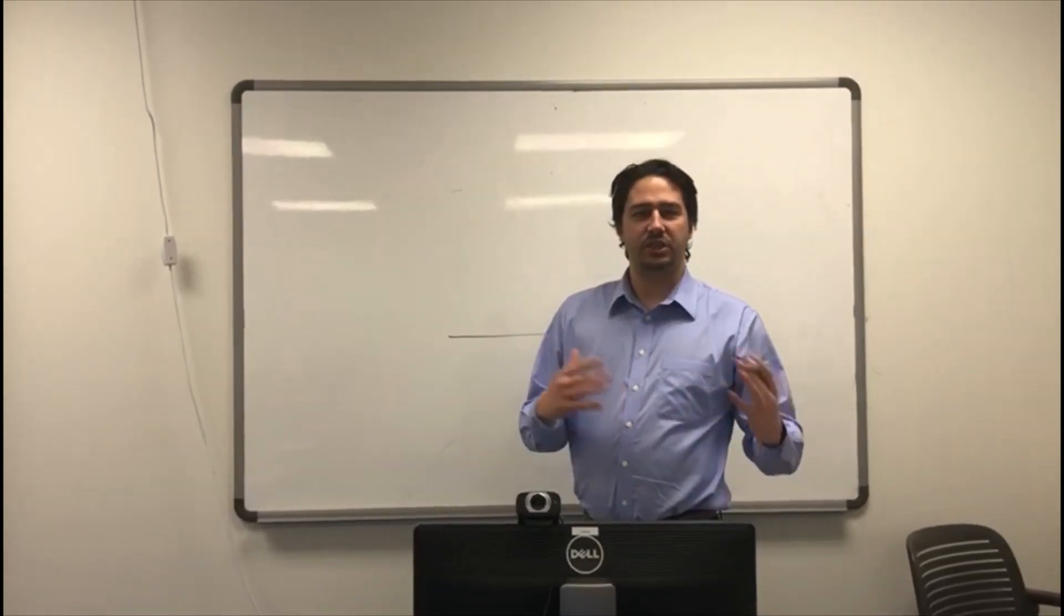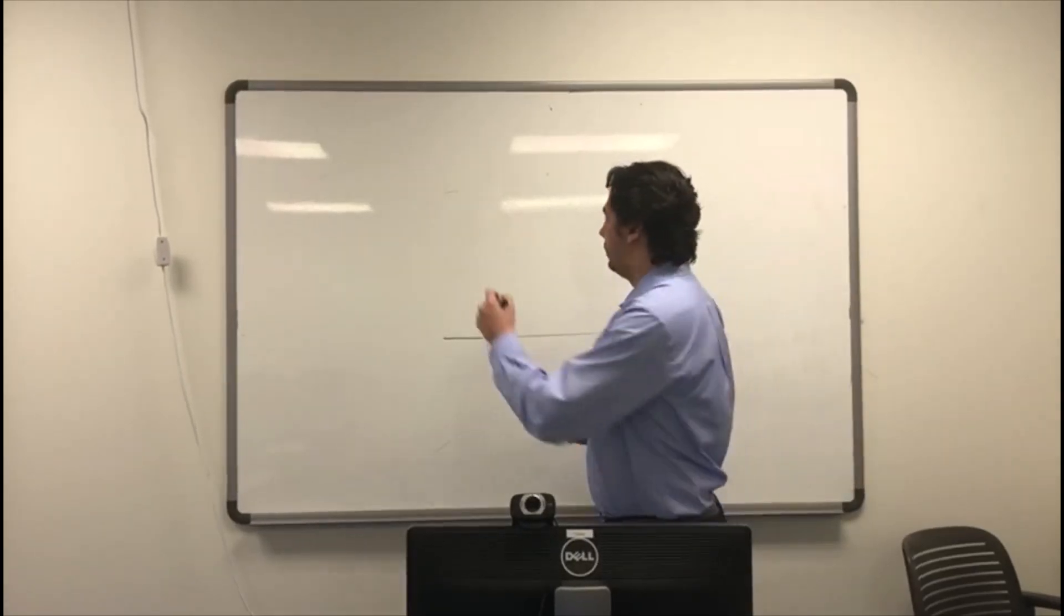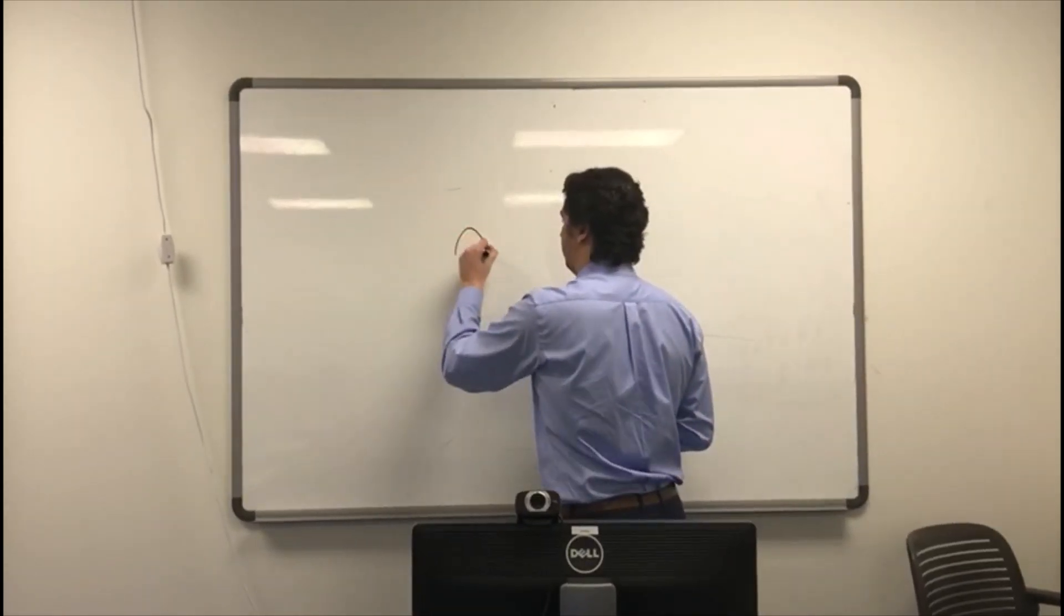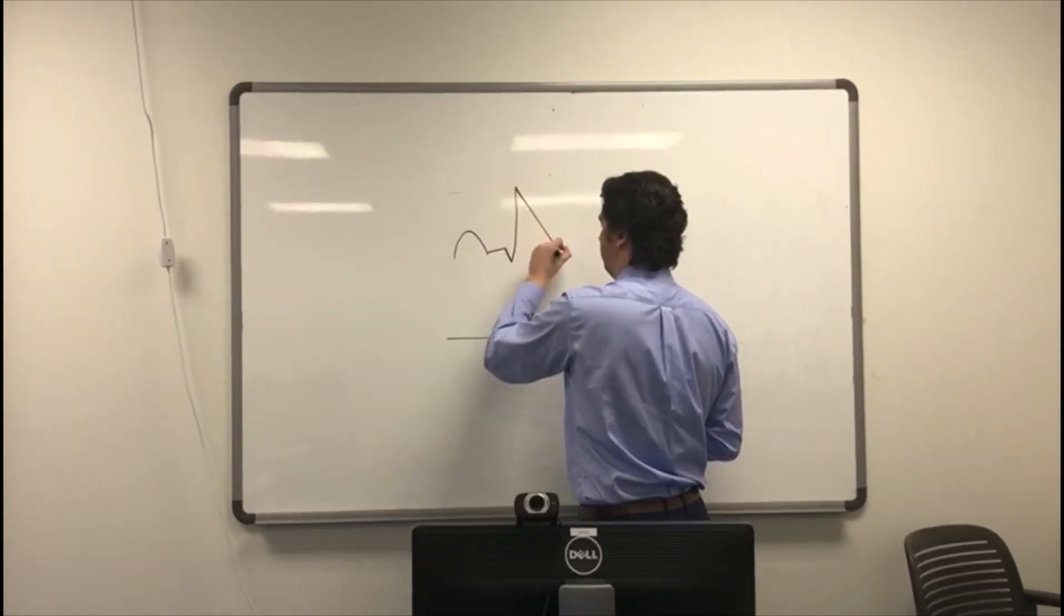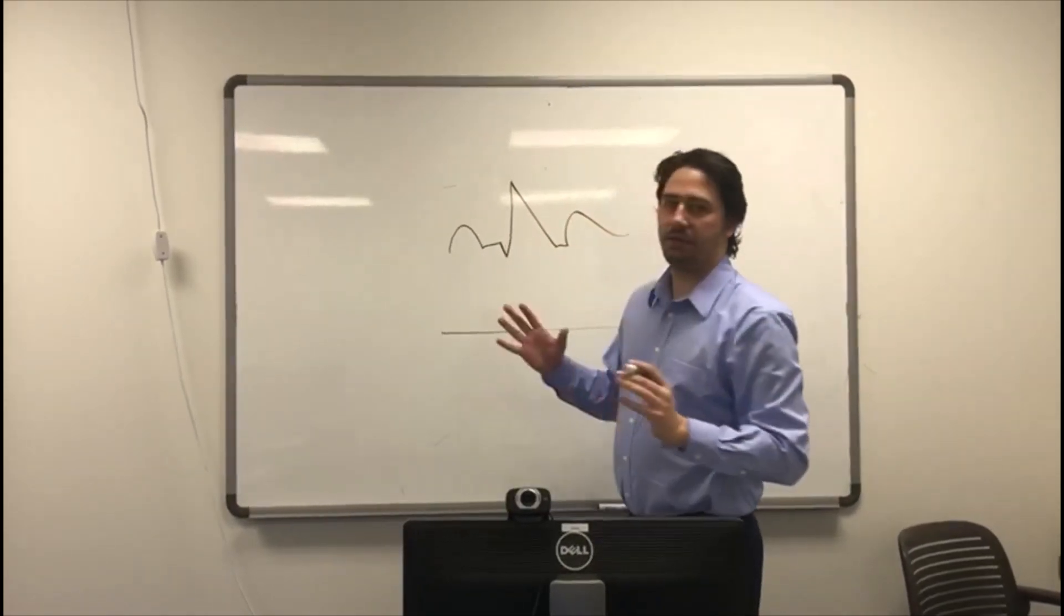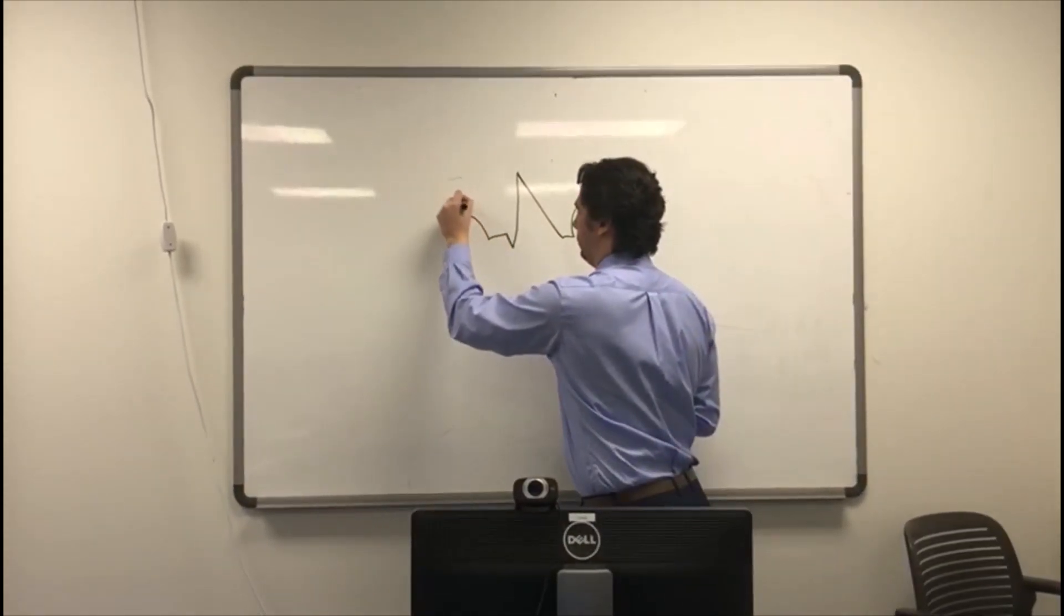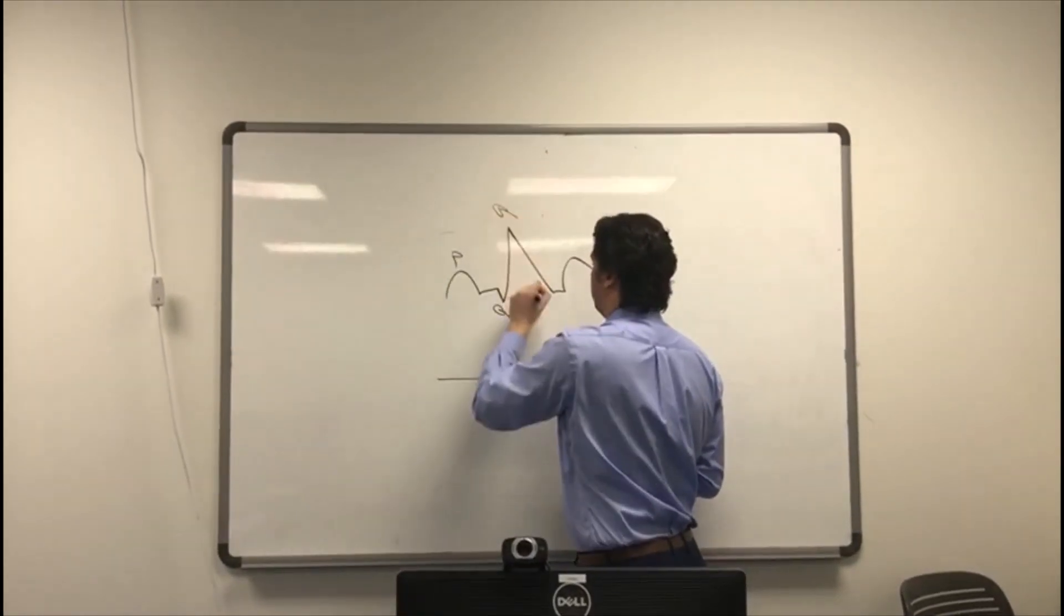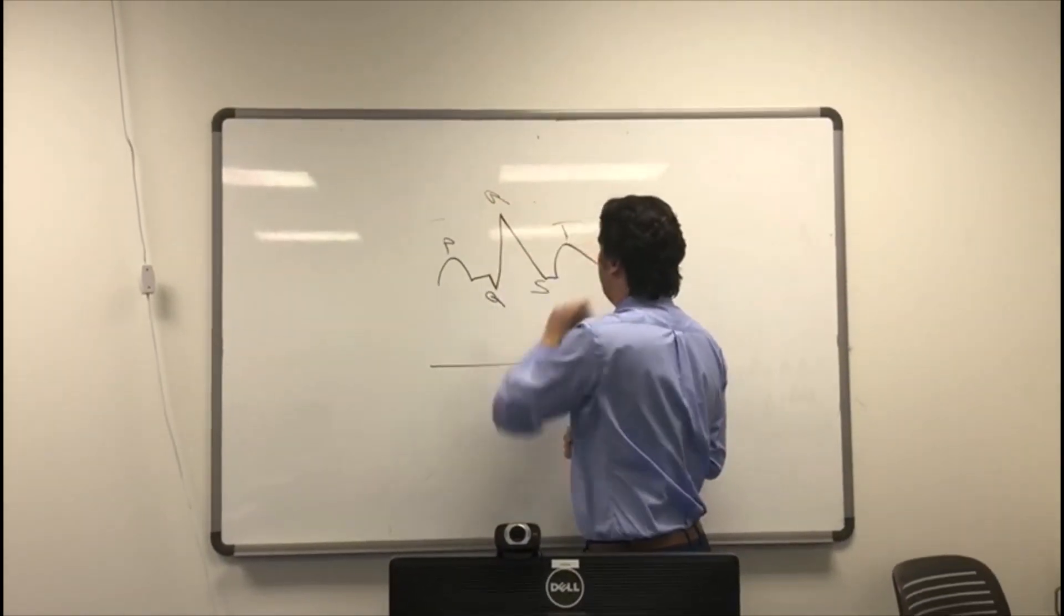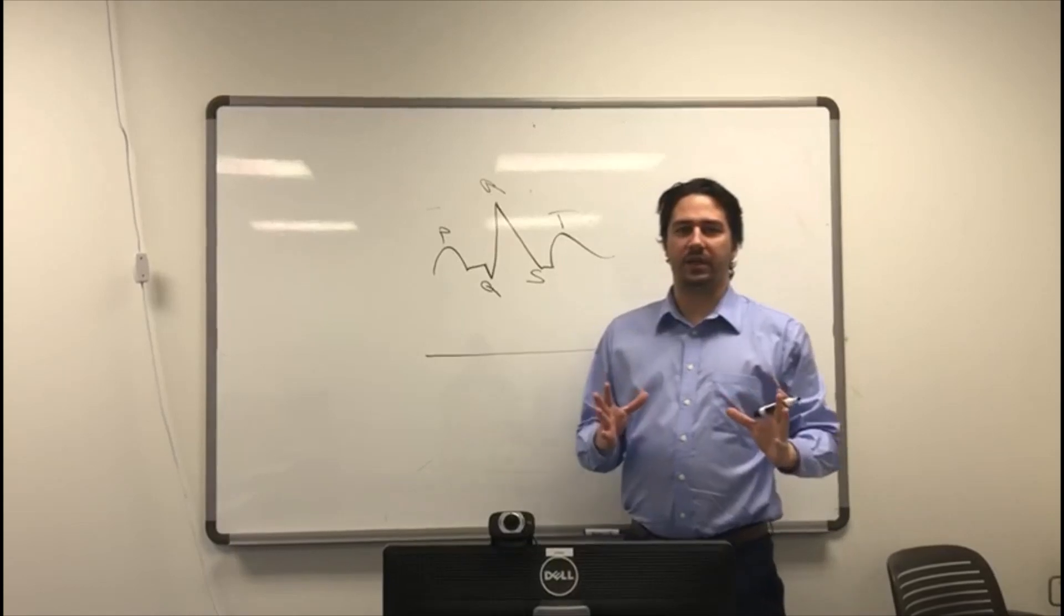So the standard ECG or EKG waveform looks a little something like this. You have your P wave, your Q, your R, your S, and your T wave, and each one represents something.